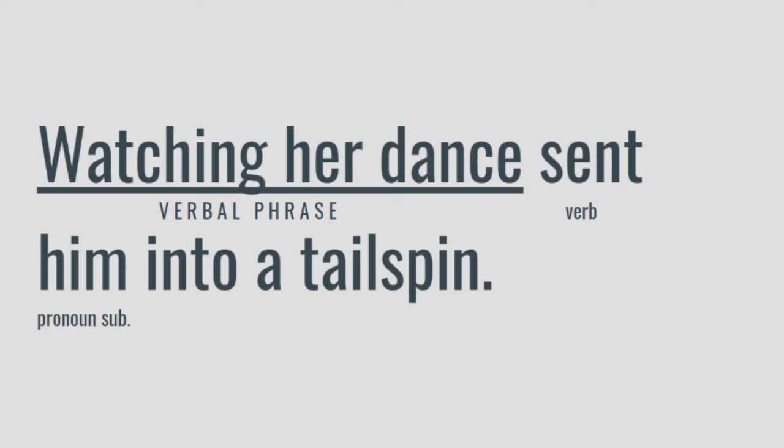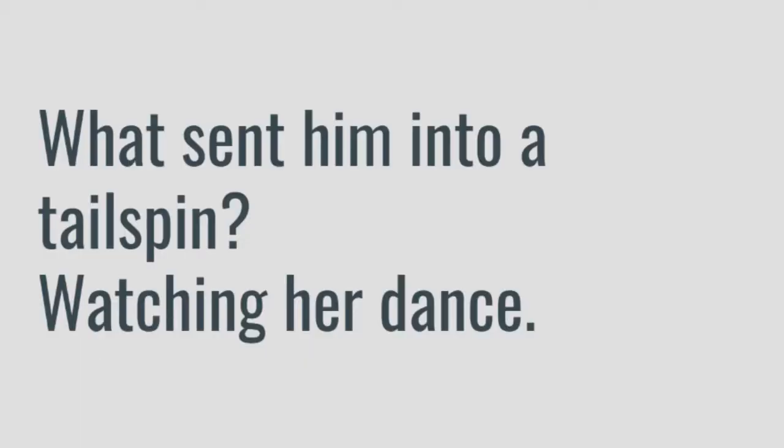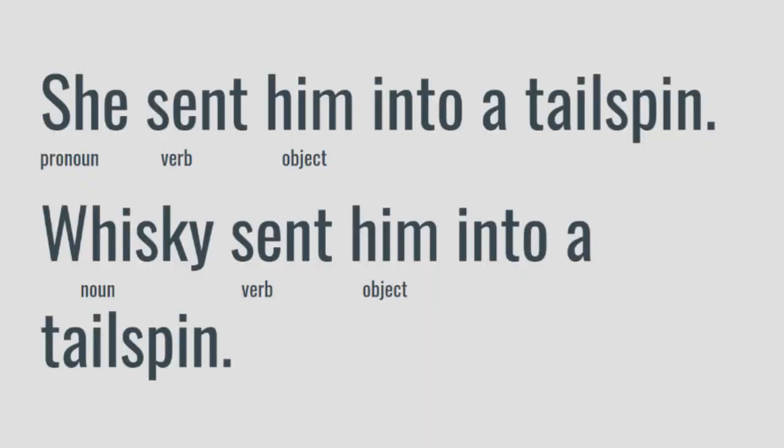Let's try again with this sentence: 'Watching her dance sent him into a tailspin.' In this case it can be even trickier, because we are often told that the predicate is the part of the sentence that has the verb in it. But what about 'watching'? In cases like this, we need to find the main verb — a verb that answers to a subject and is conjugated in the tense. In this case, that verb is 'sent.' The verb is in the past tense and its object is 'him.' So we can ask: What sent him into a tailspin? Watching her dance. We can also substitute the verbal phrase with a noun or pronoun: 'She sent him into a tailspin' or 'Whiskey sent him into a tailspin.' Through these tests, we know that 'watching her dance' is a verbal phrase and is actually the subject of this sentence.